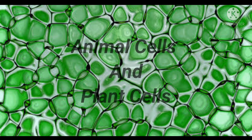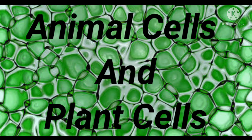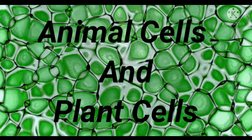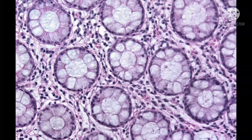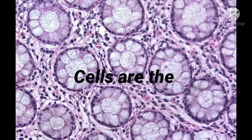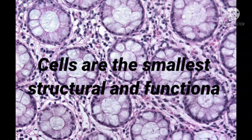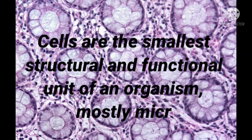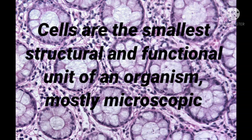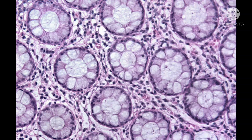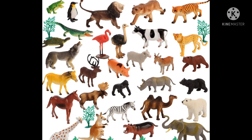Hello students and parents, welcome back to my channel. Today I'm going to explain the most important topic of biology — animal cells and plant cells. Cells are the smallest structural and functional unit of an organism, which is typically microscopic and consists of cytoplasm and the nucleus enclosed in a membrane.